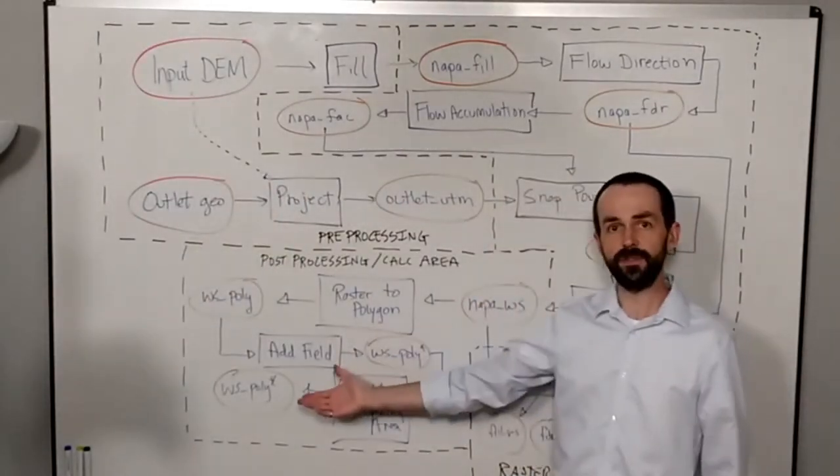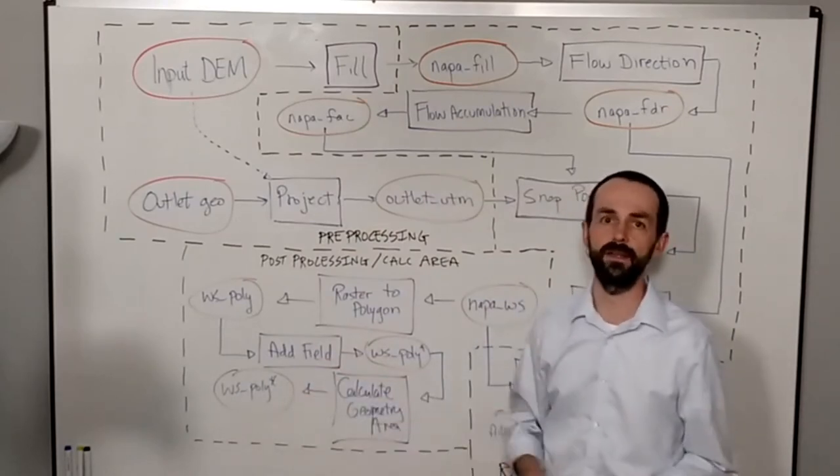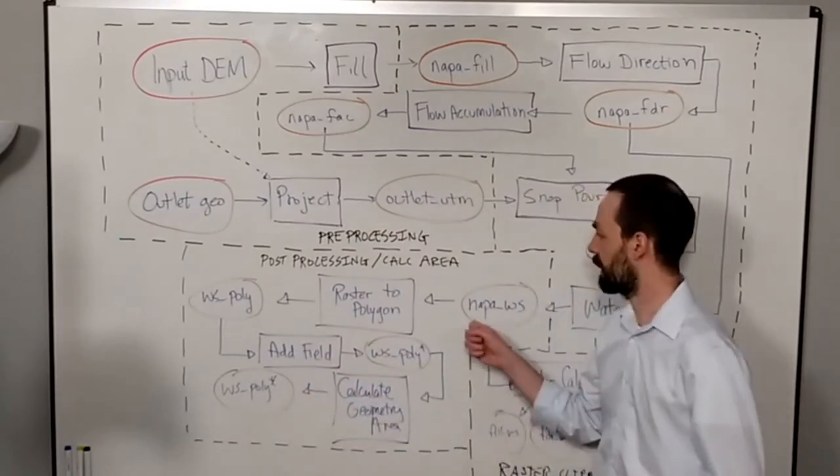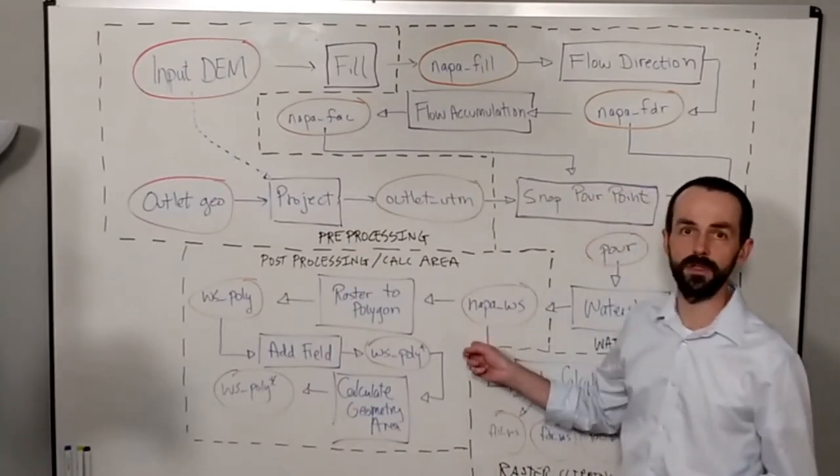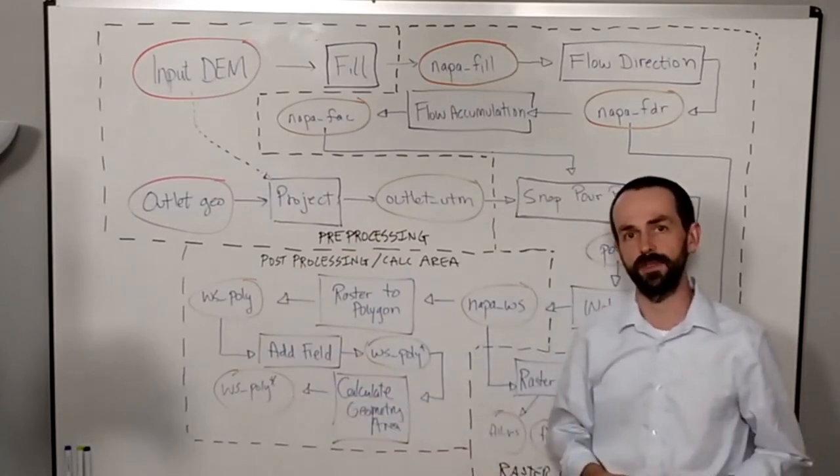And then this last group we could call our post-processing or calculating areas, where we take our raster version of our watershed, convert it to a polygon, add a field, and calculate the geometry.